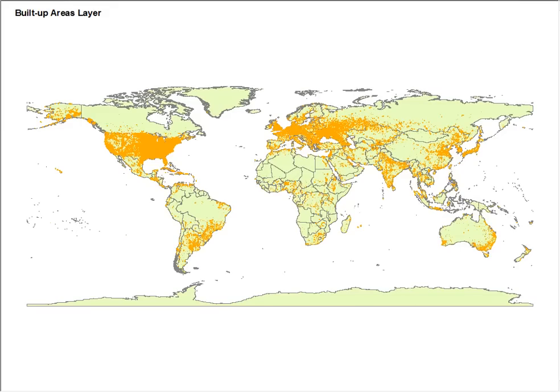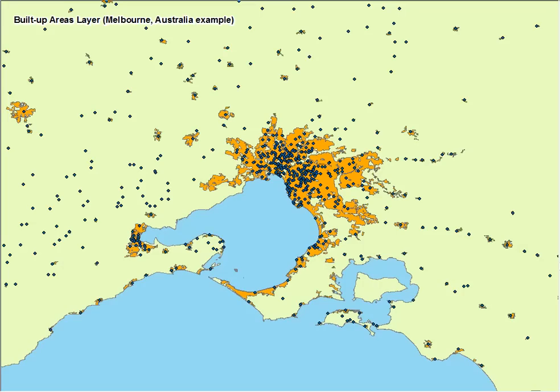The last area that I would like to preview for you today is our Built-Up Area layer. Our Built-Up Area layer currently consists of 55,000 built-up areas. Here is the Built-Up Area for Melbourne, Australia.